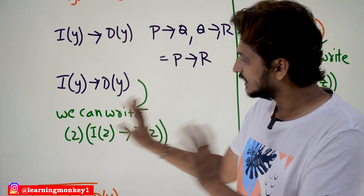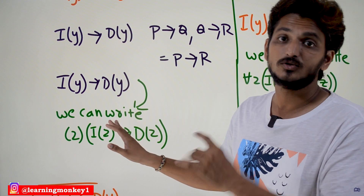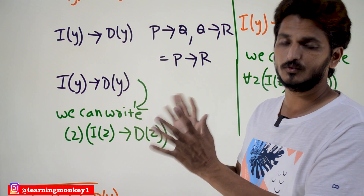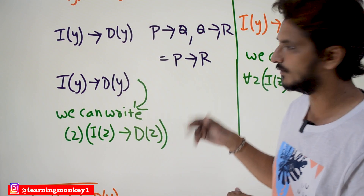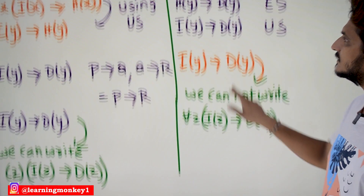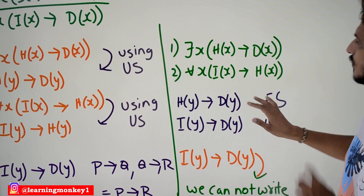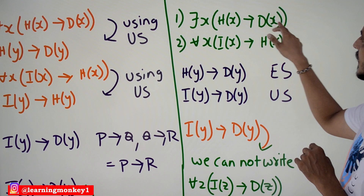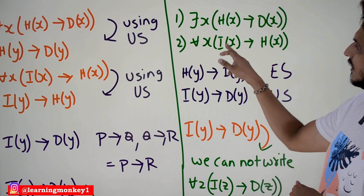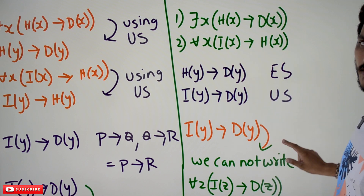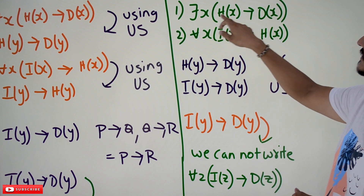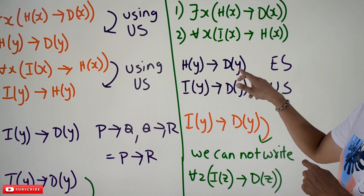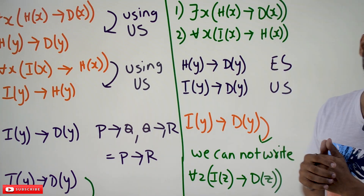In this situation it is applicable. Now let's understand when it is not going to be applicable — that will give good clarity. Take the same example with a small modification. Suppose they have given: there exists x, h(x) implies d(x), and for all x, i(x) implies h(x). So 'there exists x, h(x) implies d(x)' can be written as h(y) implies d(y), from existential specification.